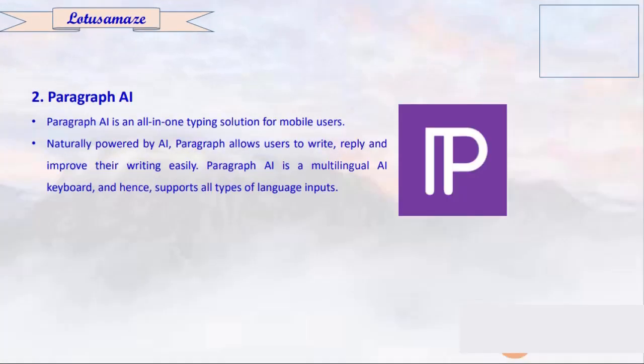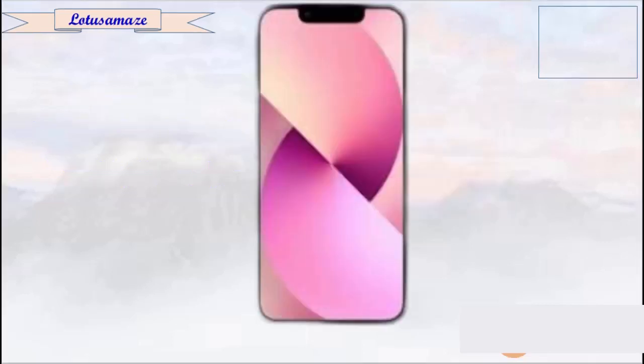The second keyboard option is Paragraph AI. It is also an app you need to download from the Play Store, and it works almost the same as the Microsoft SwiftKey keyboard. Now let's check how to use the AI bot on WhatsApp — we will try BuddyGPT.